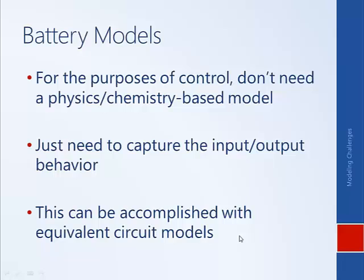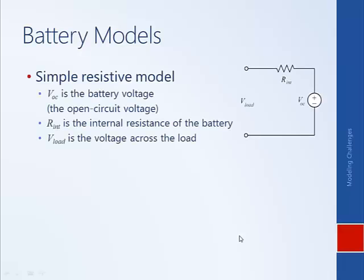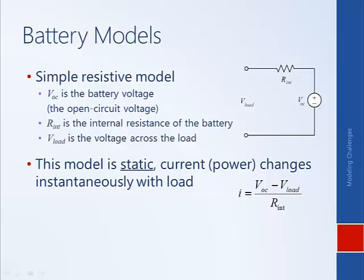Commonly, a way this is accomplished is to model the battery with an equivalent circuit model — that is, we find circuit models that have similar input-output behavior to the battery. The simplest approach is to use a simple resistive model, as shown here. In this case the battery is modeled as having some open circuit voltage and some internal resistance. This is what we would call a static model — it derives from Ohm's law, it is an algebraic model, and if the load changes, the output changes instantaneously. So if the load on the battery changes, the current will change instantaneously.